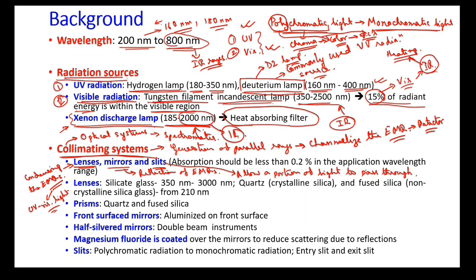Ideally monochromatic would be only one wavelength, but in practice it would be a group of wavelengths with a very narrow bandwidth. Bandwidth means the region, say lambda-1 to lambda-2 with a central wavelength lambda-C, where the difference may be 10 to 15 nanometers or so. These narrow bands can be generated using the slits.